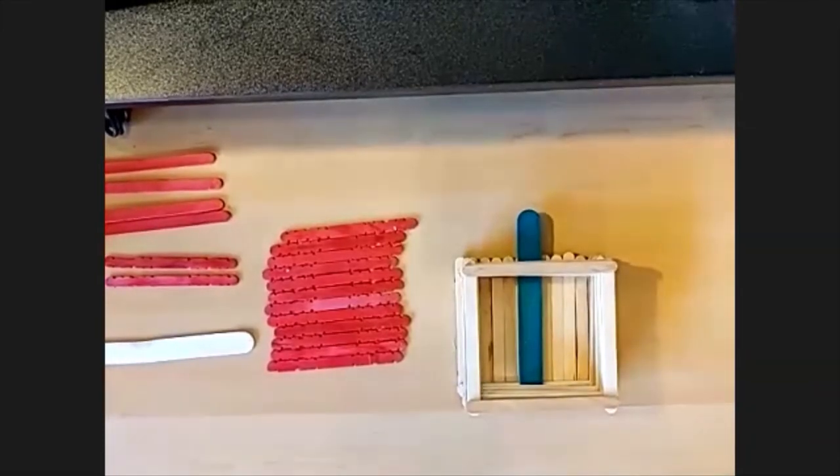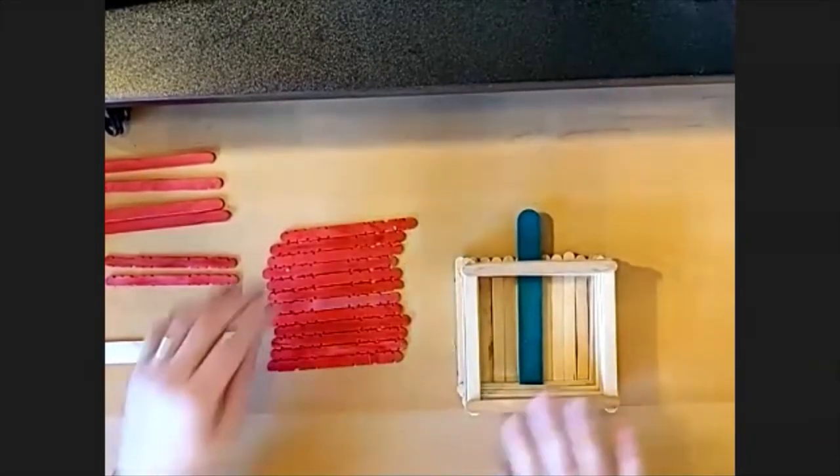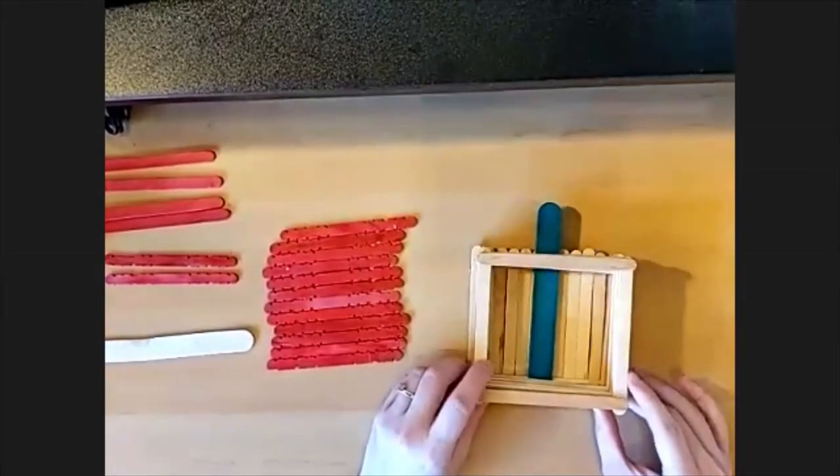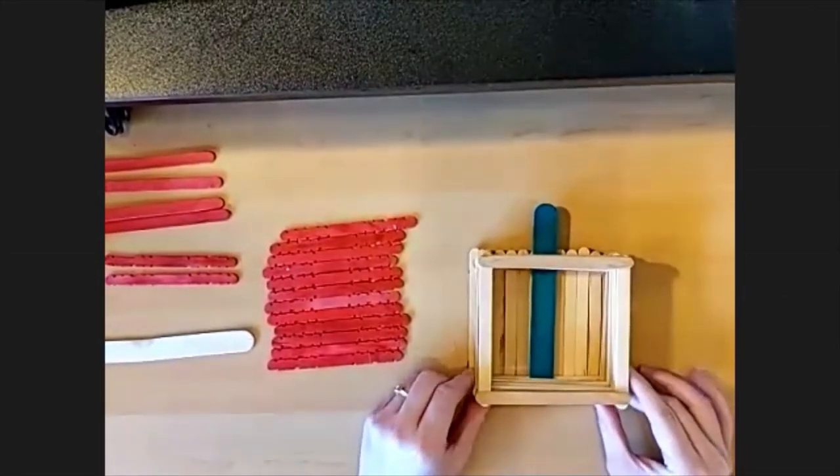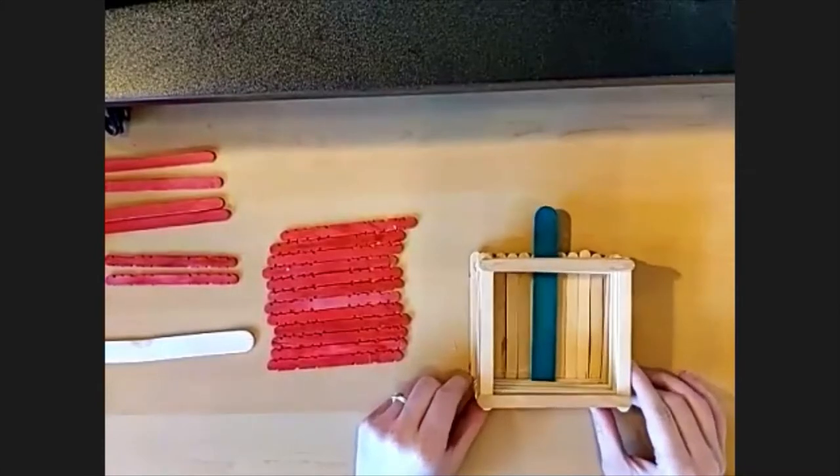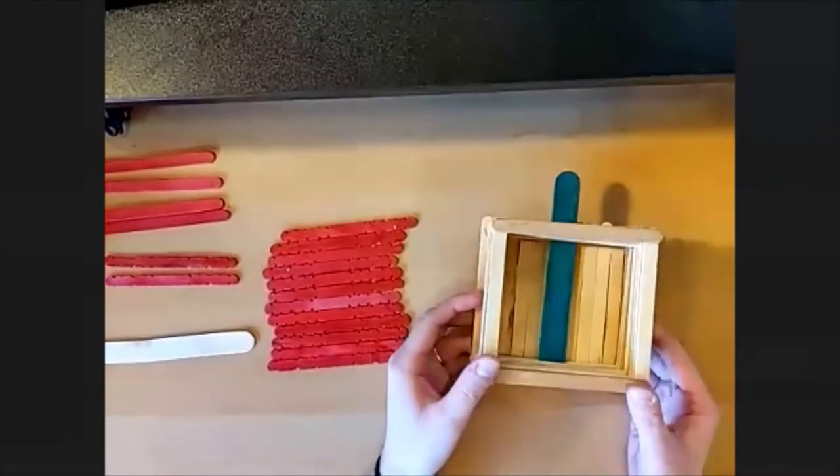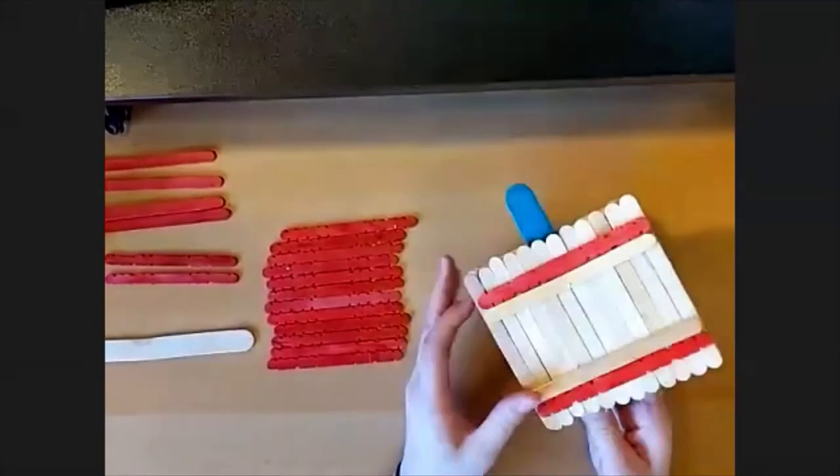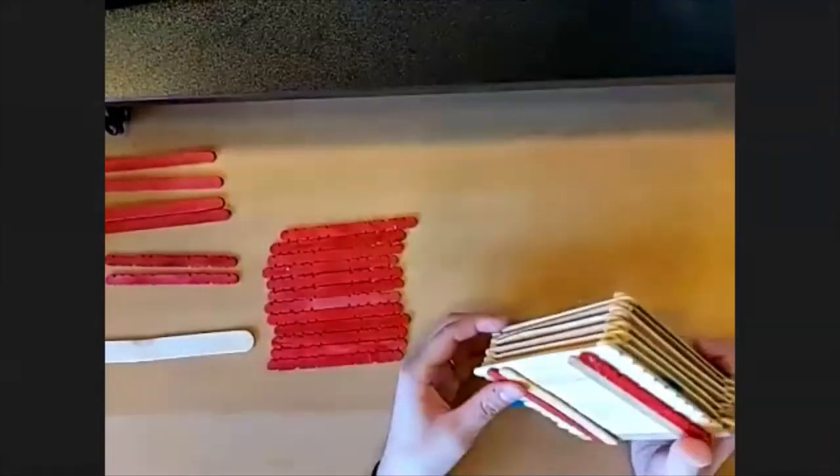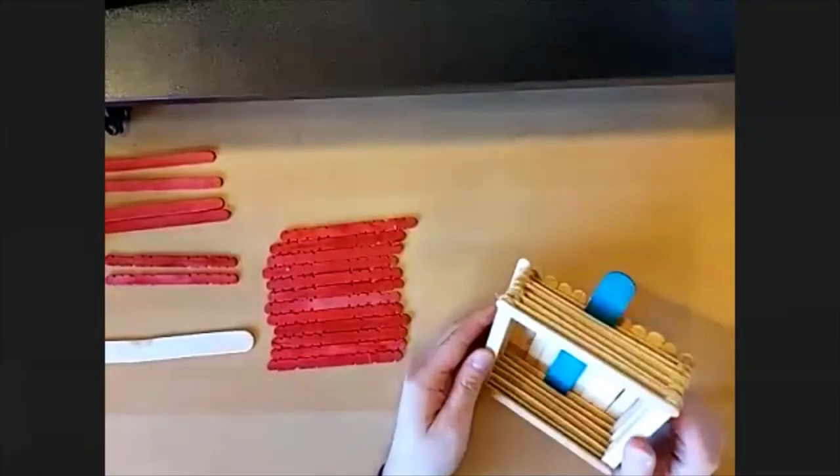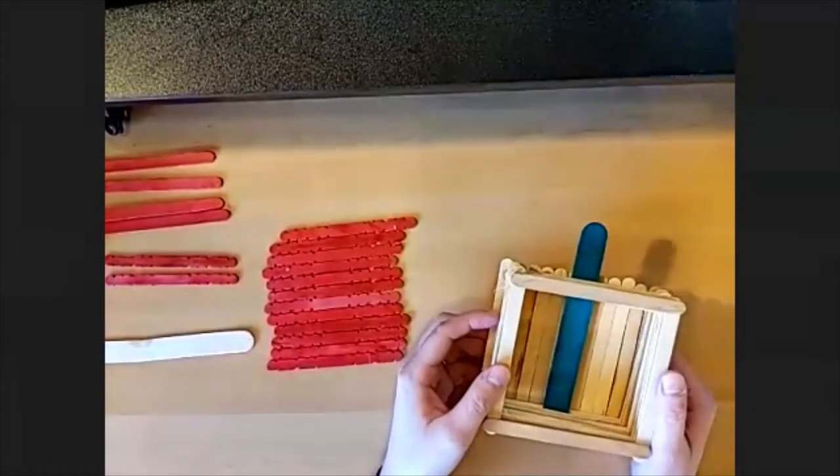All right, so welcome to Crafternoon. This is a monthly program we run for teens where we do crafts and artwork together. This month we're going to be working on making our own bird feeders out of popsicle sticks. We'll be using a take and make kit that the library had available this month, but you can do it on your own with popsicle sticks and glue at home.